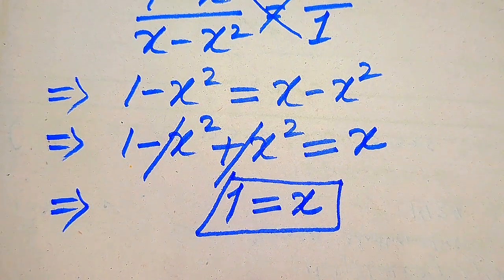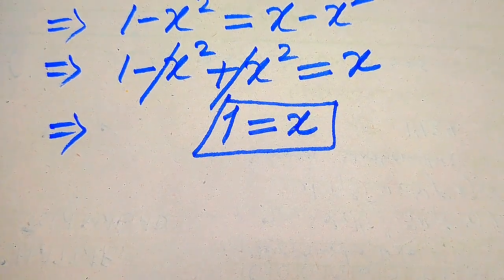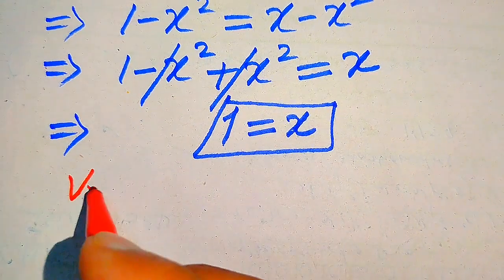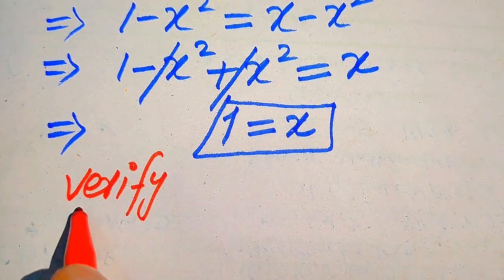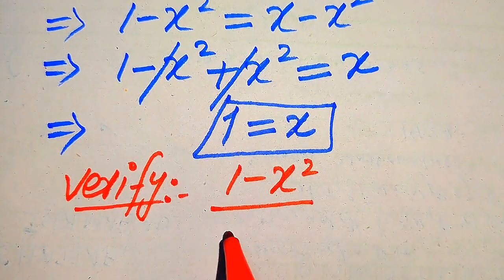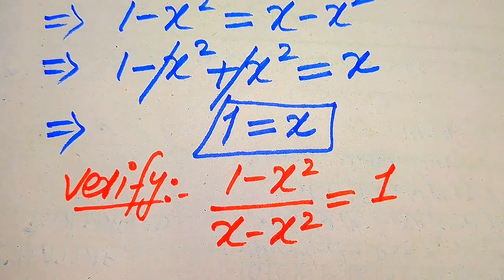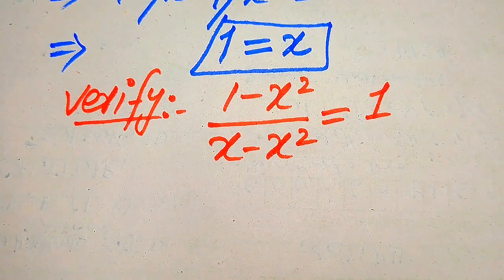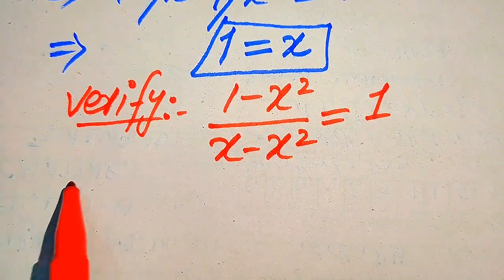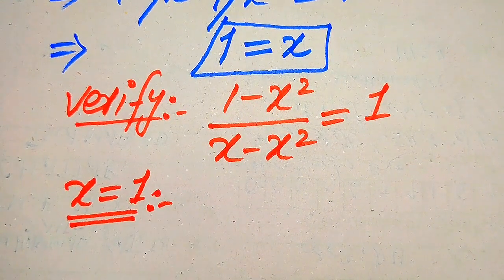In the first method we get only one root. Now we need to verify whether this root is a solution of the given equation or an extraneous root. For verification, we copy the given equation: (1 minus x squared) divided by (x minus x squared) equals 1. We verify x equals 1 by substituting it into the left hand side of the equation.